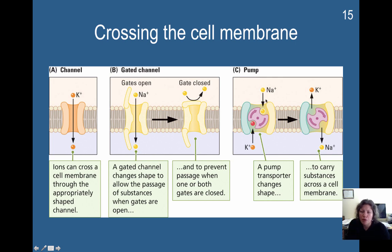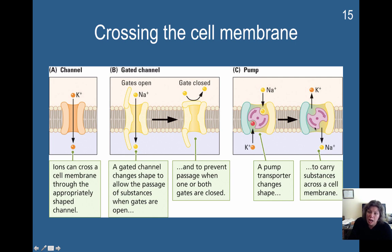You also have a pump — this is an example of a sodium-potassium pump. A pump transporter changes shape to carry substances across the cell. Sodium comes in and fits the transporter, potassium comes in and fits it as well. When these two ions come in contact with the transporter, it changes shape and basically exchanges them for each other. This is the sodium-potassium pump, and we'll be talking about it more later because it's important for cellular communication.